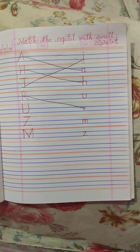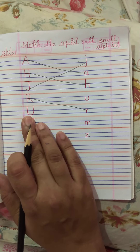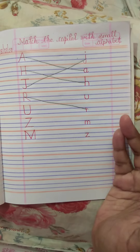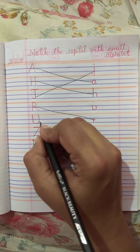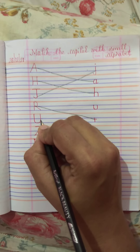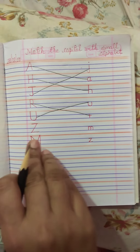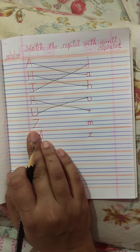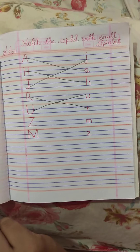Now our next letter is capital U. So you all have to draw a line from capital U to small u like this. So now our next letter is capital Z. You all have to draw a line from capital Z to small z.